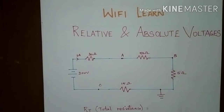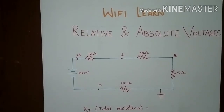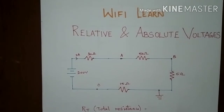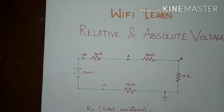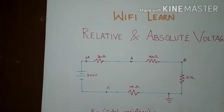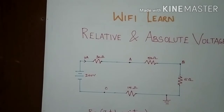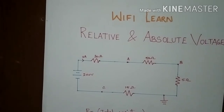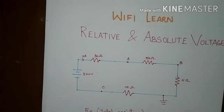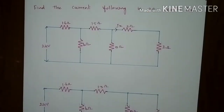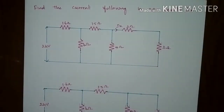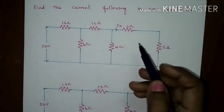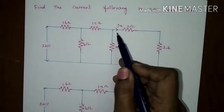Before going to the topic, in the last video I have given a homework problem. Let us see the problem and also let us see the solution. This is the problem: find the current flowing through the 2 ohms resistor in this branch.